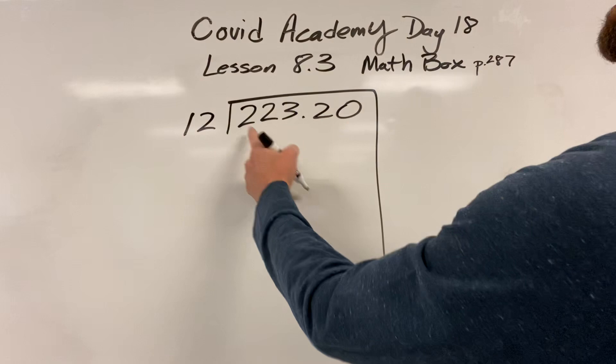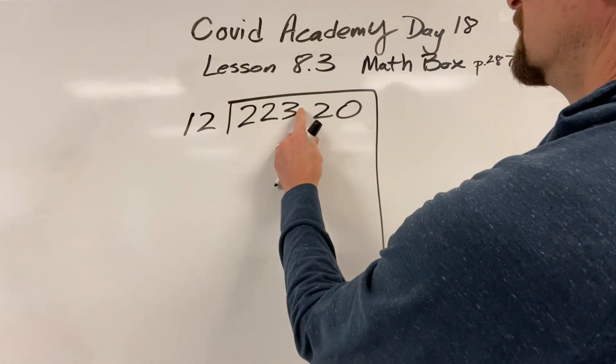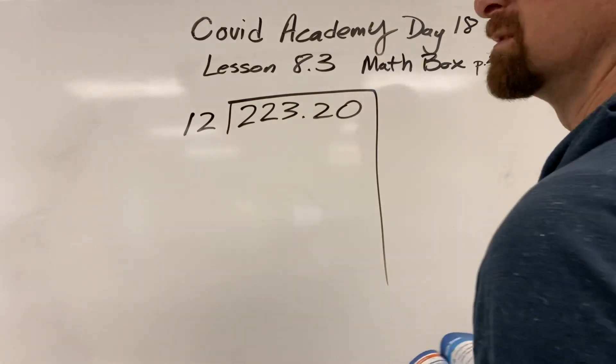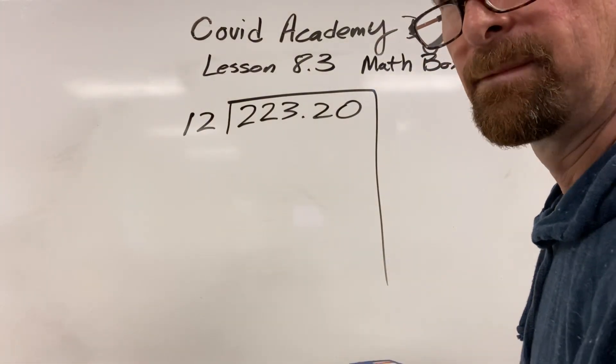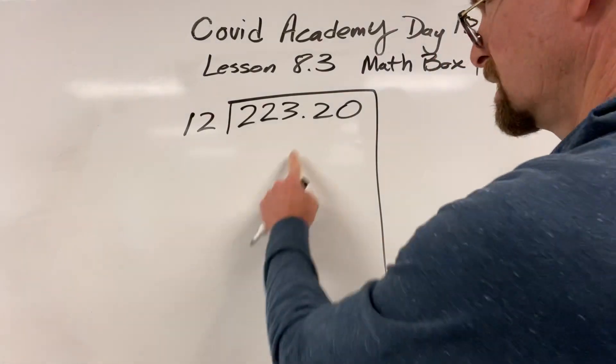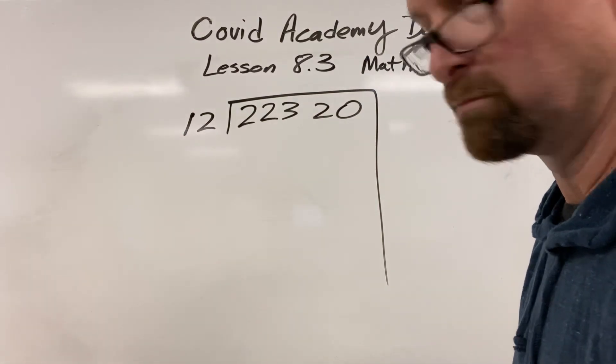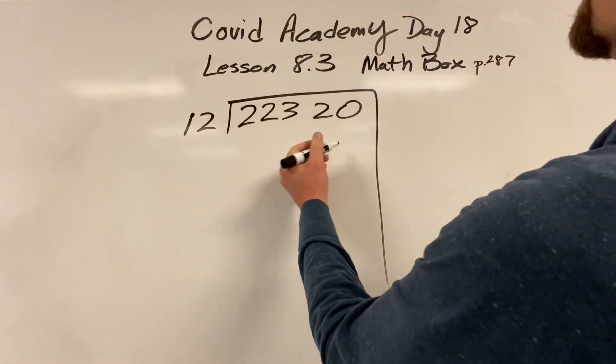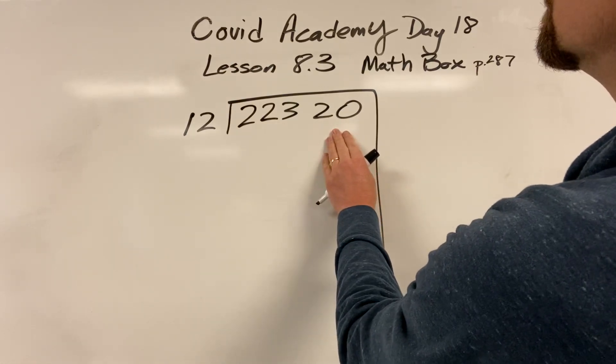So let's think. How many 12s? Let's ignore this. What are we supposed to do? I think we ignore the decimal. Let's make it this, and then at the end we put it in. So how many 12s are we going to do this?